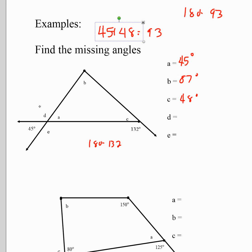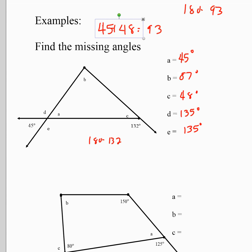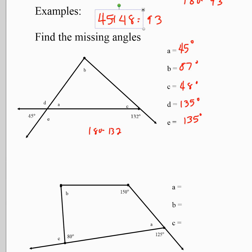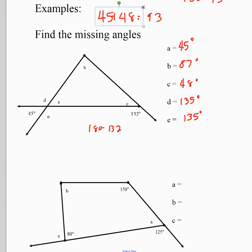To get angle D, we know D is supplementary to 45, so we do 180 minus 45 to get 135. And since D and E are vertical angles, E is also 135 degrees. We are just extending our existing geometry knowledge by including interior angles.